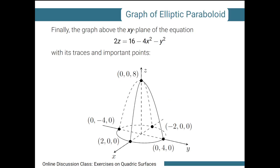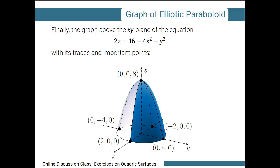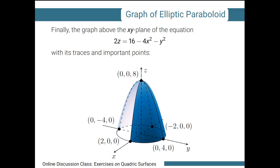From our sketch so far, we identify the portion of the traces that are inside or covered by the surface. For these portions, we replace the solid lines by broken lines after labeling all the necessary and important points. This is now the final sketch of the elliptic paraboloid. Here is an animation illustrating the graph of the elliptic paraboloid in 3D space. This ends the solution for exercise 2. In the next video, we will sketch the graph of a cone.